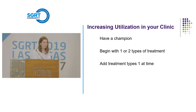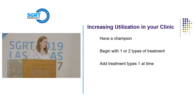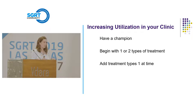Start with a champion. I think Vision RT may call that person a super user, but I like the word champion — it sounds a little more exciting and fun. Then begin with one or two types of treatments. When you initially roll something out, you don't want to say we're going to use it on every single patient. That creates stress and can slow your schedule down. Try to select one treatment, then add treatments one at a time.